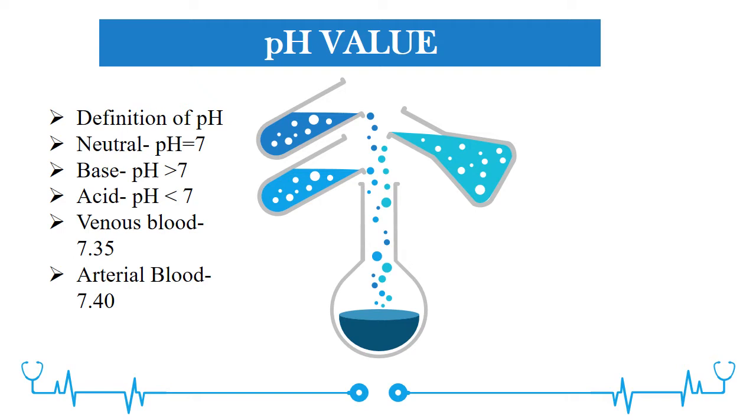A neutral solution has a pH value of 7. When the pH of a solution is more than 7, it is considered a basic solution. When the pH value is lower than 7, the solution is acidic.